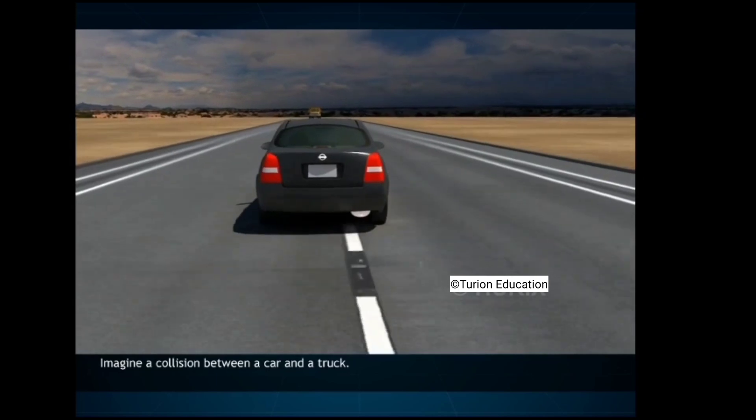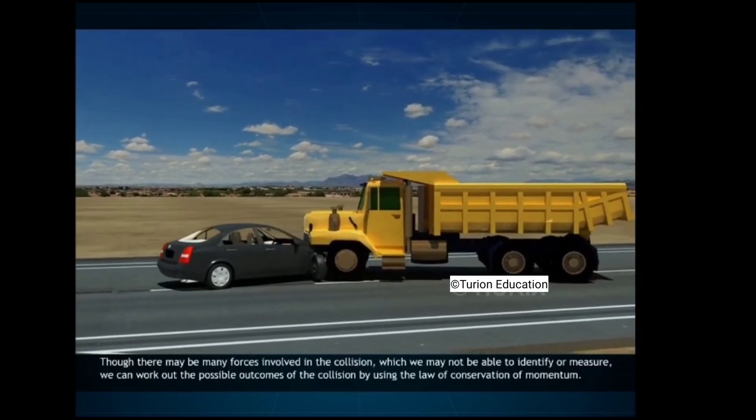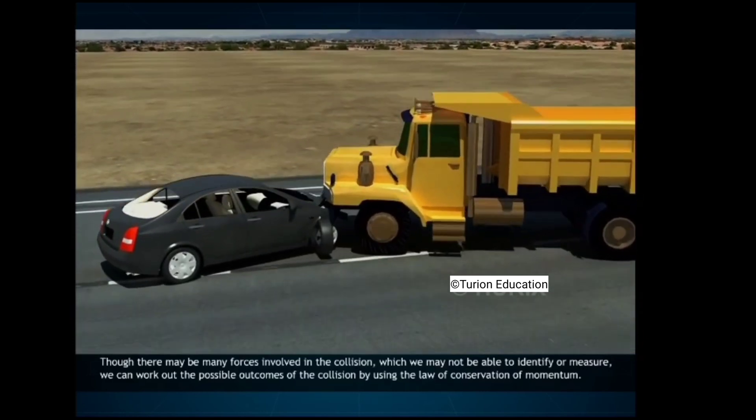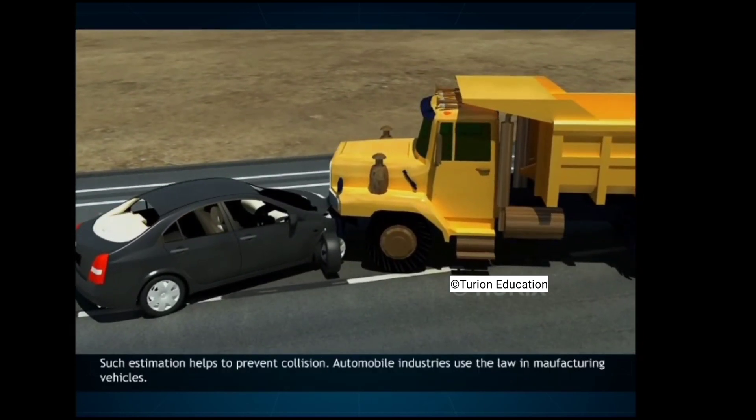Imagine a collision between a car and a truck. Though there may be many forces involved in the collision, we can work out the possible outcomes of the collision by using the law of conservation of momentum. Such estimation helps to prevent collision. Automobile industries use the law in manufacturing vehicles.